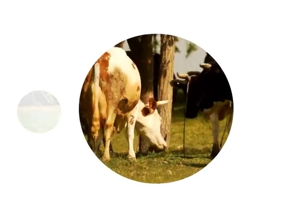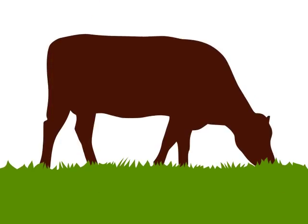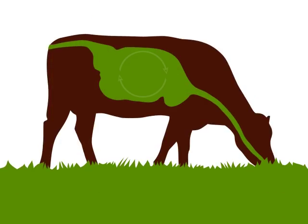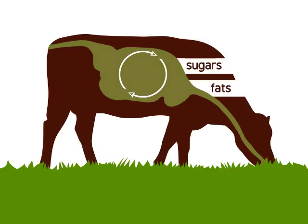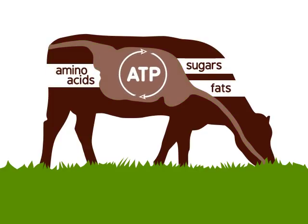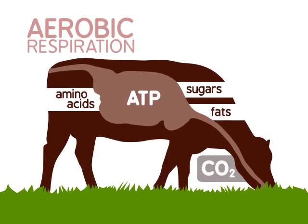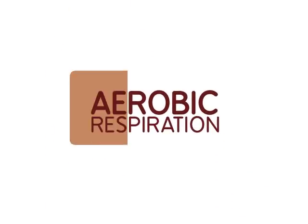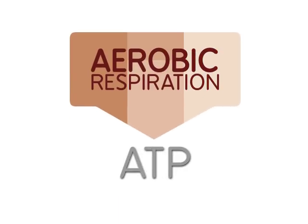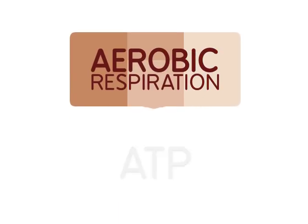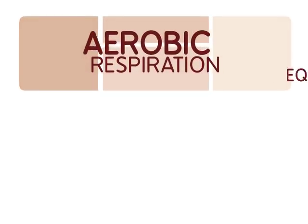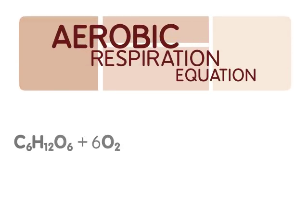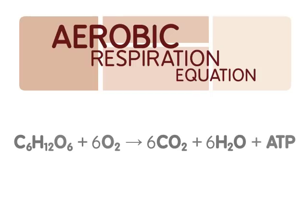Animals are equally important in this relationship. Plant material consumed by animals is converted into sugars, fats, and amino acids. This conversion results in the production of energy and carbon dioxide through a process known as aerobic respiration. Aerobic respiration involves several stages that result in ATP production. The general equation for aerobic respiration is: sugar plus oxygen gives carbon dioxide plus water plus ATP.